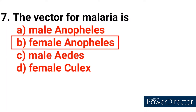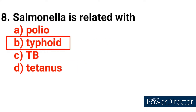Question number 7: The vector for malaria is? Answer option B — female Anopheles. Question number 8: Salmonella is related with? Answer option B — Typhoid.